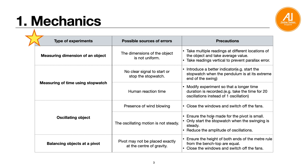Make sure the needle passing through the hole is small and not too big, otherwise the swinging motion might be irregular. Also, reduce the amplitude of oscillation — meaning the angle at which you displace the pendulum before releasing. Do not displace it by too large an angle; about 10 degrees should be good enough.